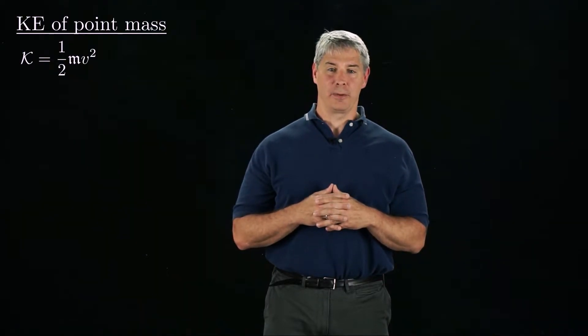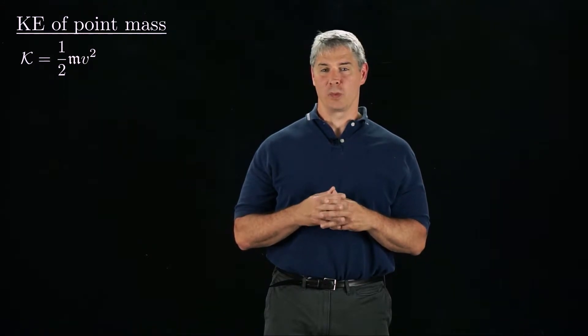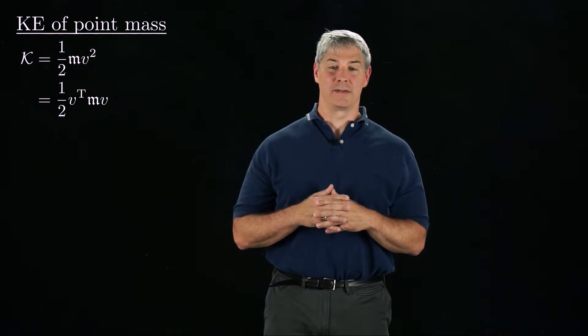First, recall that the kinetic energy of a point mass is one-half mv squared, where m is the mass and v is its scalar velocity. If v is a vector, we could rewrite this as one-half v transpose times m times v.